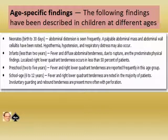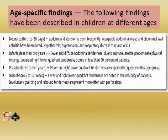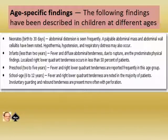In children below 2 years and above 30 days, fever and diffuse abdominal distension due to rupture are seen, with localized right lower quadrant tenderness in less than 50% of patients. In preschool children between 2 to 5 years, fever and right lower quadrant tenderness are recorded frequently. In school children between 6 and 12 years, fever, right lower quadrant tenderness, involuntary guarding, and rebound tenderness are present.